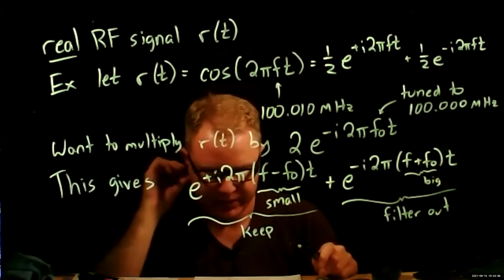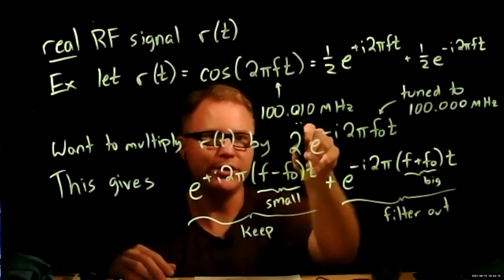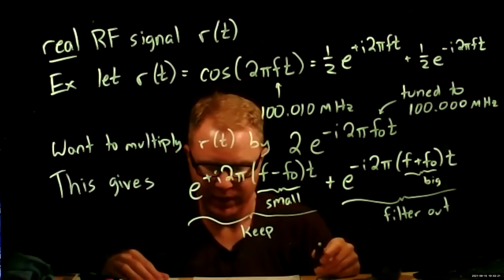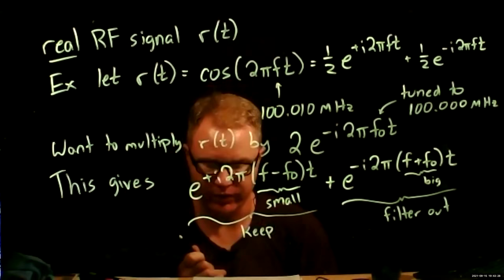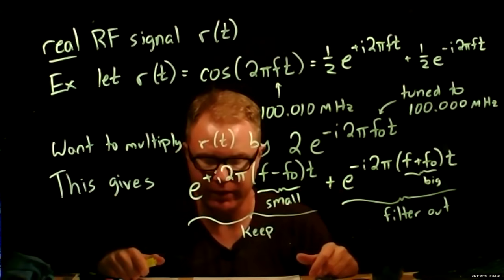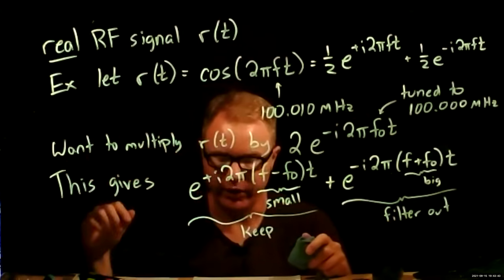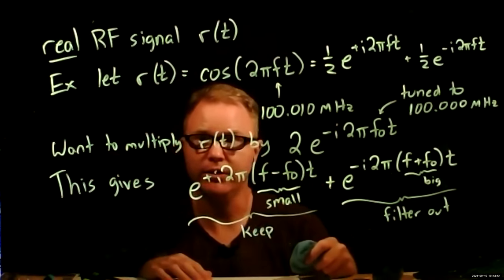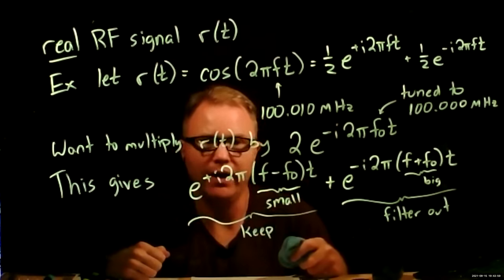The big question is: these are analog signals coming in at 100.010 megahertz. What does it even mean to multiply by a complex number like this? How do we do an analog multiply by a complex number? The answer is basically how you would do any complex multiply — you just do the real part and the imaginary part separately. Let me write this out in components, real and imaginary part, and we'll see how these things are kept track of separately, all as real electrical signals.